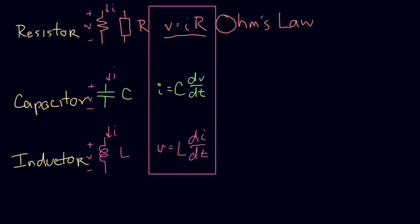Now I want to talk about two more things: sources. We need power coming from somewhere, and sources provide power and input signals to our circuit. We have two kinds of sources: a voltage source and a current source.